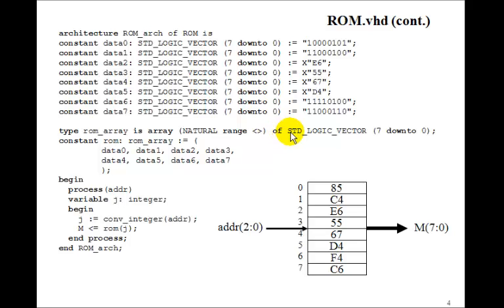They're of type standard logic vector 7 down to 0. This means that every entry in the array, 85, C4, are all of type standard logic vector 7 down to 0.